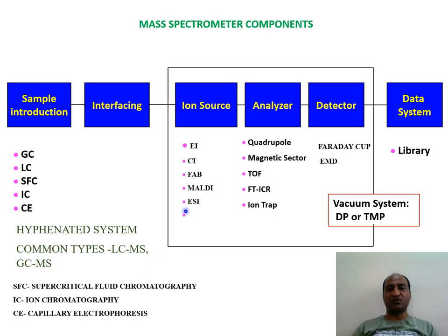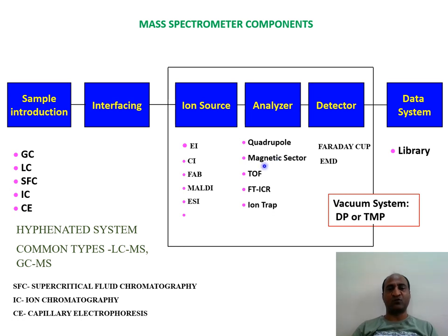The ionization techniques include electron impact, chemical ionization, FAB (fast atom bombardment), MALDI, and ESI (electrospray ionization). The analyzer types include quadrupole, magnetic sector, time of flight, Fourier transform, ion cyclotron resonance, and ion trap. These two systems — ionization and analyzer — can be combined in various ways to get different types of mass spectrometers. For example, electron impact with magnetic sector, electron impact with time of flight, chemical ionization with quadrupole, or chemical ionization with magnetic sector. This gives a wide variety of mass instruments that we can use based on our needs.